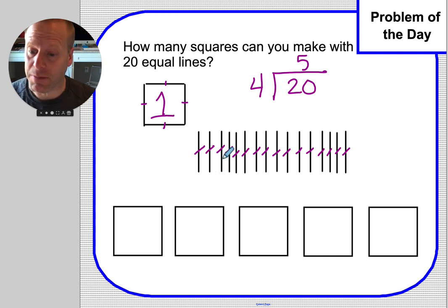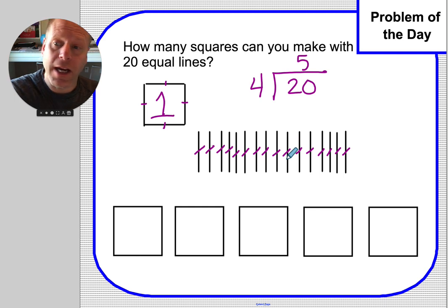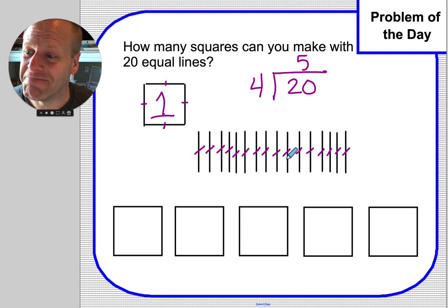So, the best thing to do is maybe get some toothpicks, 20 of them, and make some squares and see that, yeah, there are really five fours inside of a 20. Five squares in a pile of toothpicks. Thanks for doing the problem of the day with me, everybody. Thanks now.